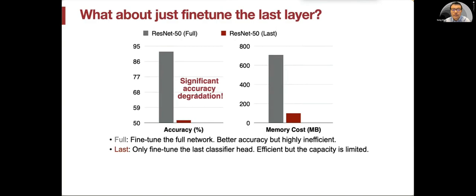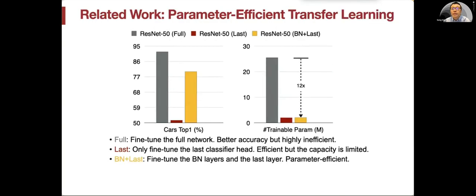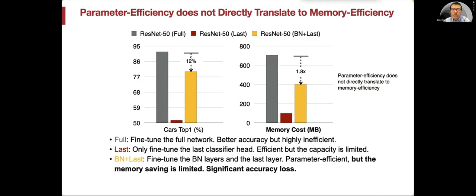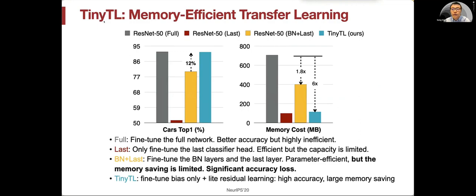What about just fine-tuning the last layer? It indeed saved a lot of memory but suffers from significant accuracy degradation. What about related work on parameter-efficient transfer learning? That can reduce the number of trainable parameters by 12x but suffers from accuracy loss. The actual memory saving is only 80%. So parameter efficiency does not directly translate to memory efficiency - 12x versus only 80%. We proposed Tiny TL in NeurIPS 2020. Tiny TL stands for tiny transfer learning, which is memory-efficient transfer learning. We use three techniques.